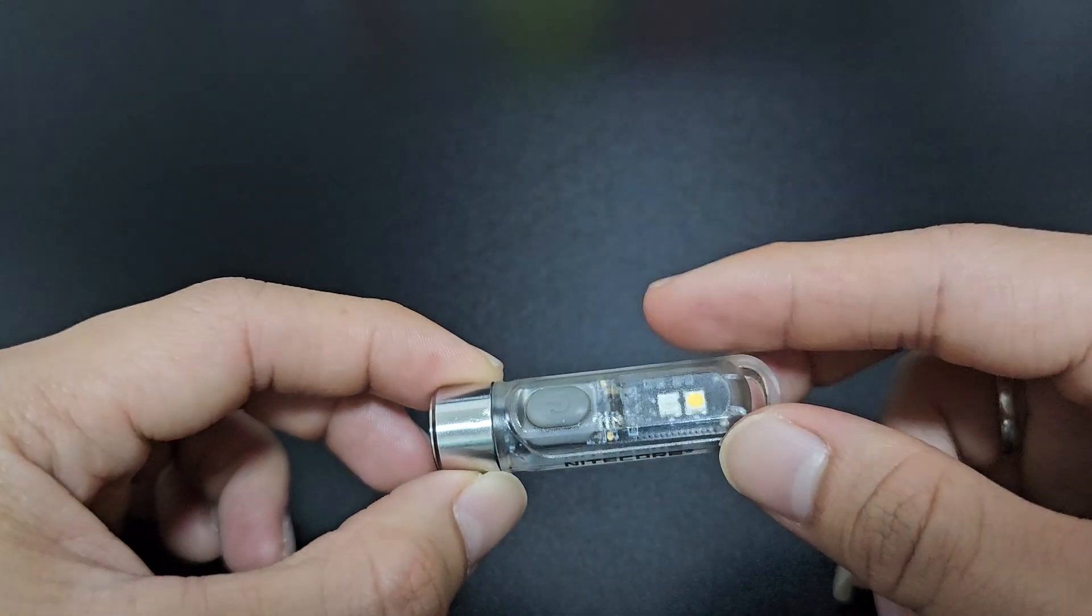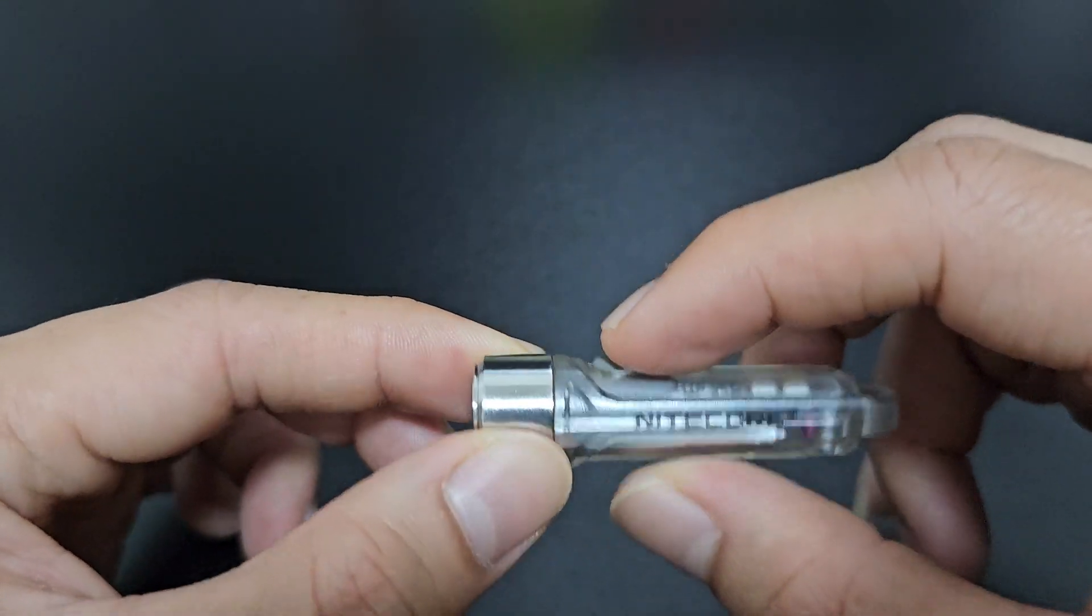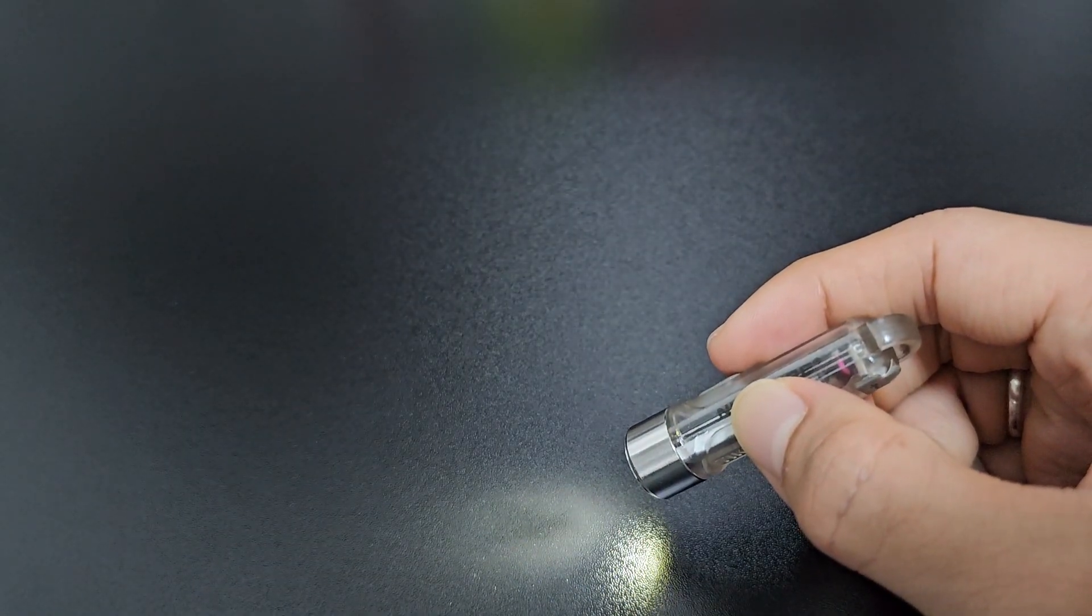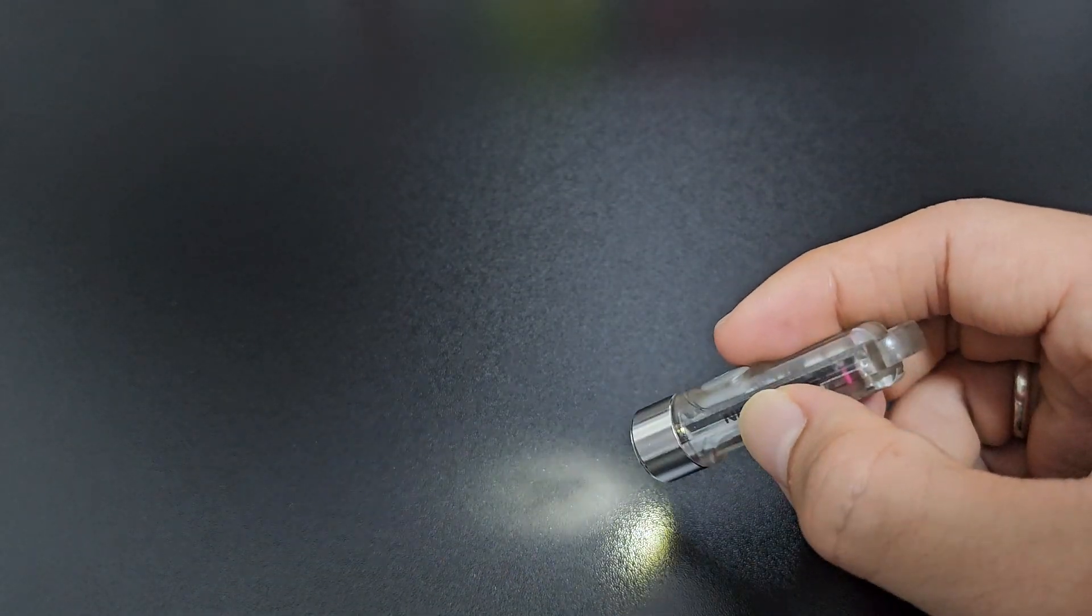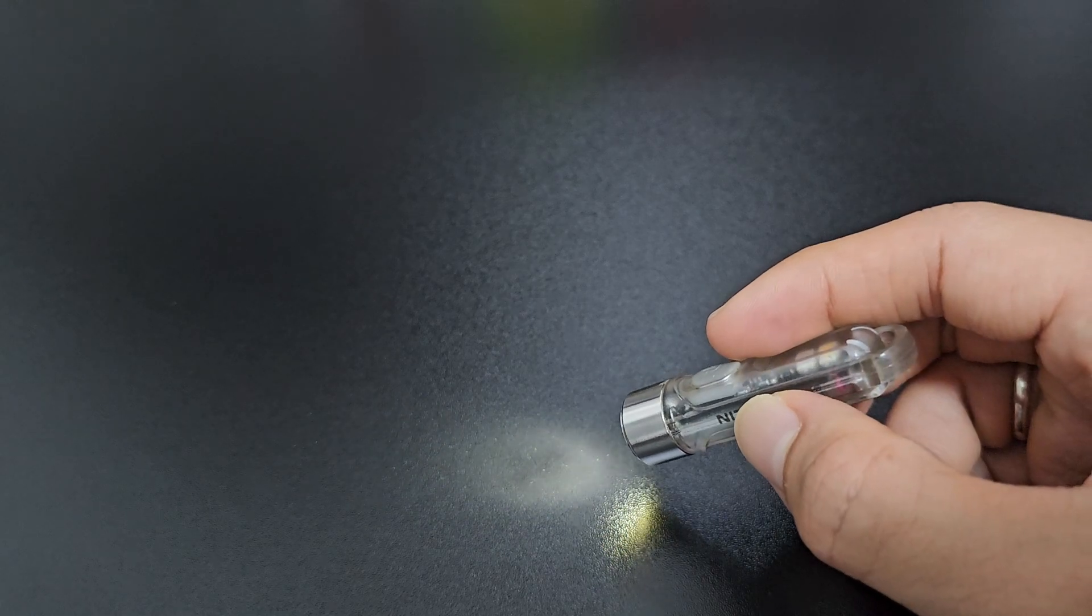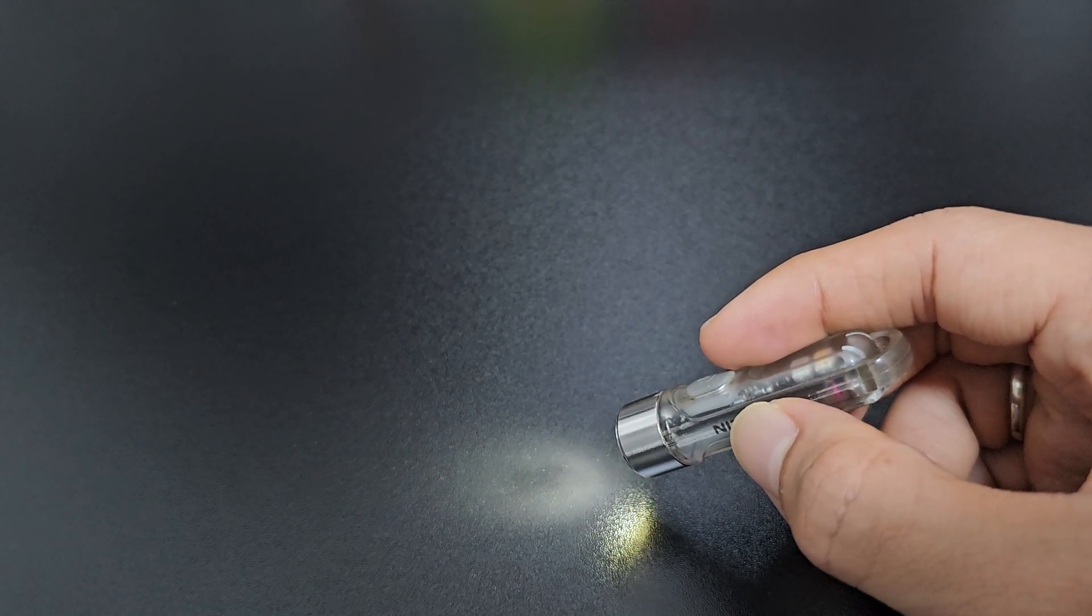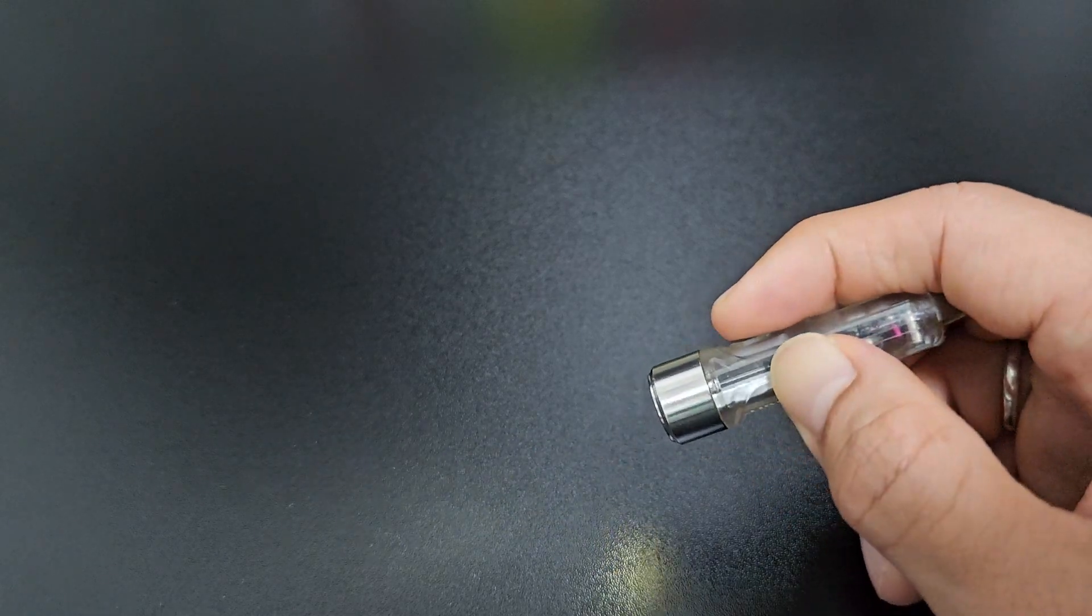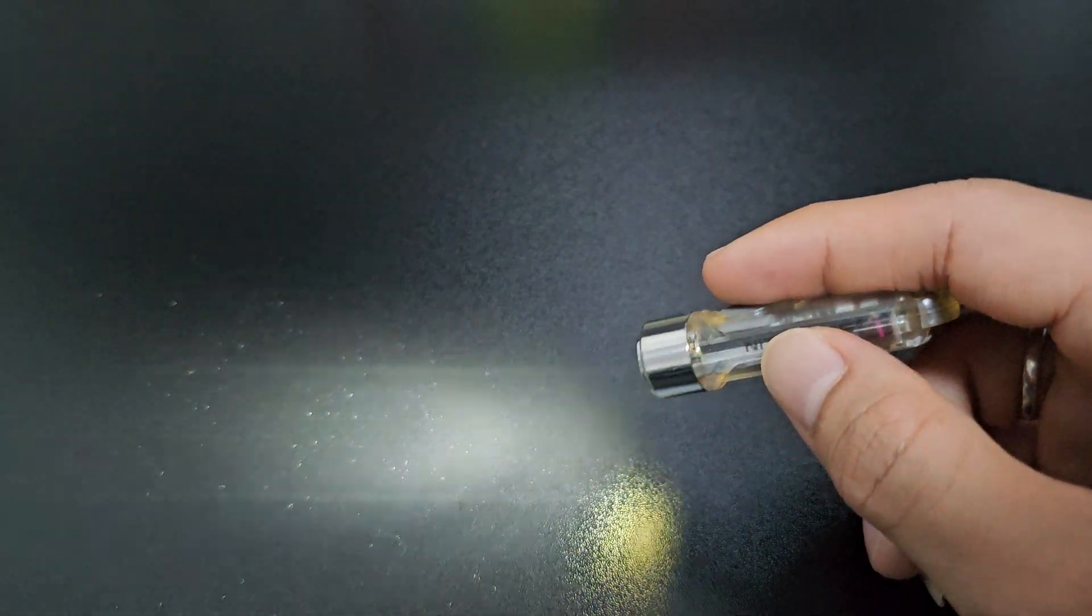And it has three modes. Ultra low is at about one lumen, so this is useful if you are at night and you want to just do a quick search of your stuff. You don't want to alert other people, you can use this mode. Then moving on, we have the low. The low is at 15 lumens, so 15 lumens is also good for low light conditions as well.